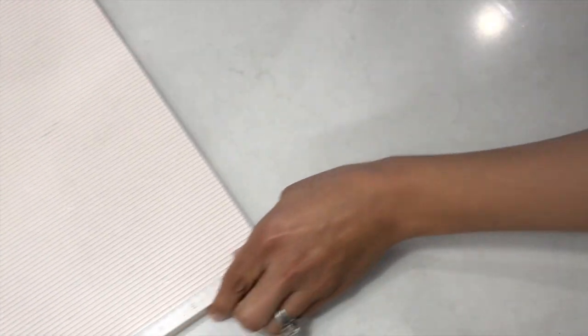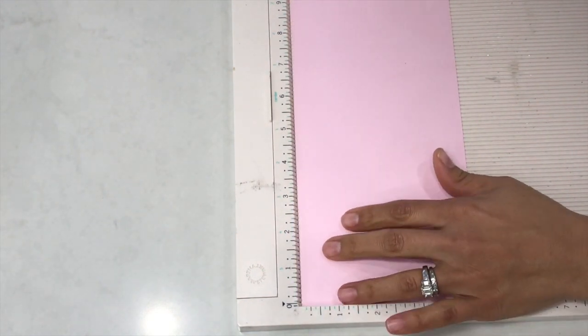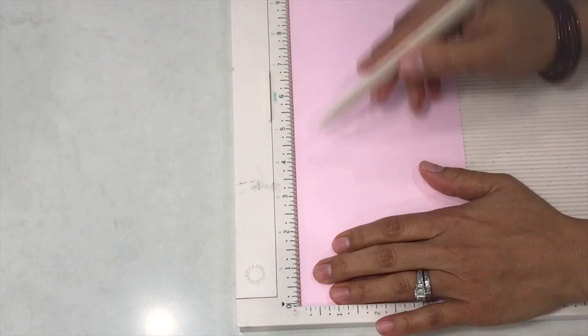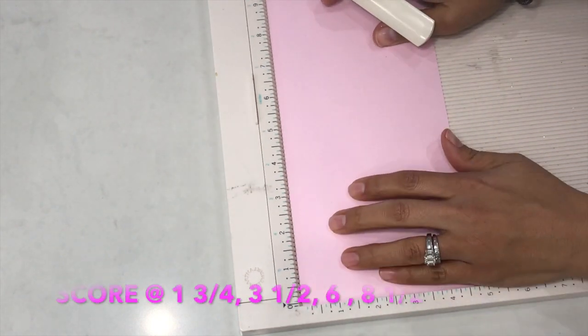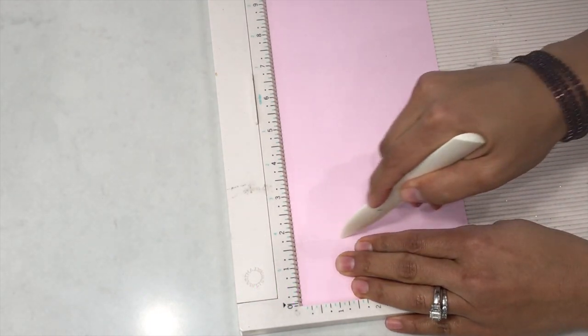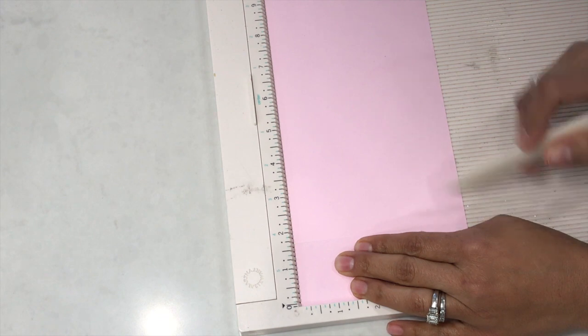Then you're going to take your scoreboard and line it up 12 inches in length this way. You're going to score at 1 3/4 inches, so one, two, three. Then you're going to score at 3 1/2 inches.